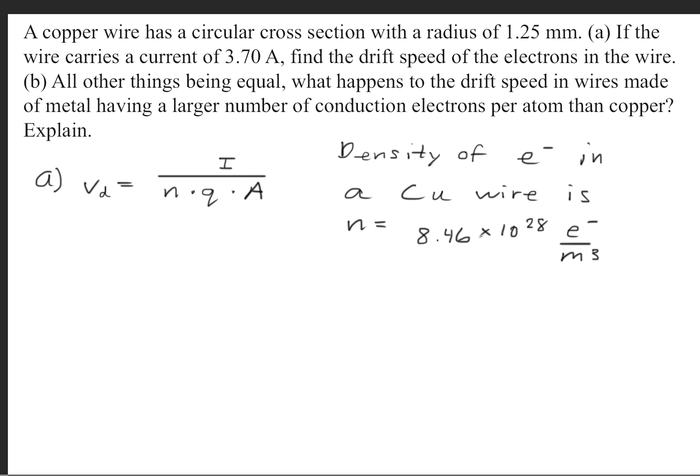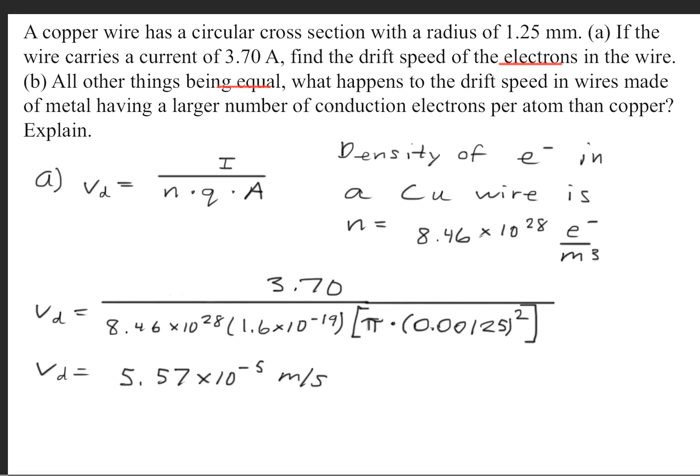In your textbook, you'll find that the density of the electrons in a copper wire will have the value of 8.46 times 10 to the 28th power electrons per meters cubed. So plugging in these values, we'll get a drift speed of 5.57 times 10 to the minus 5th meters per second.